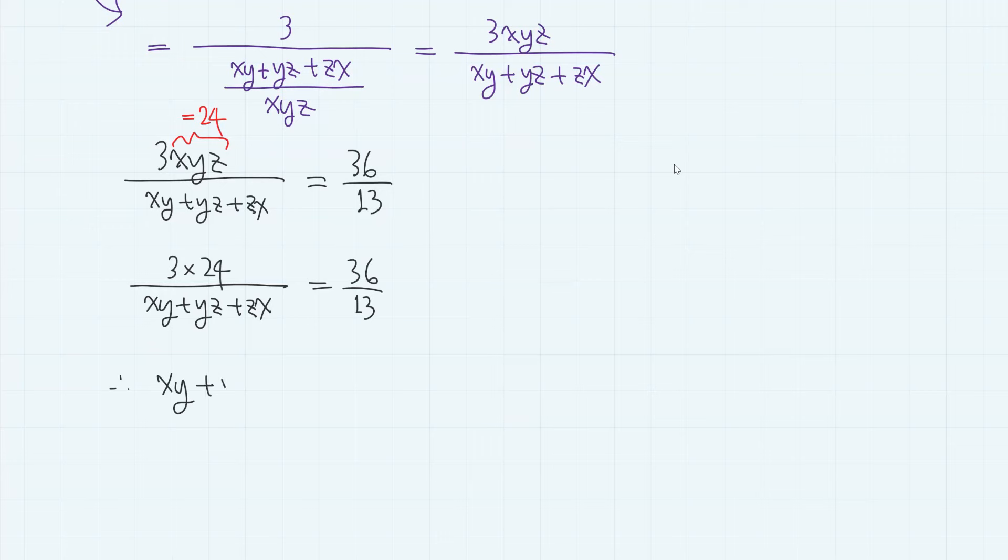Therefore, xy plus yz plus zx is given as 3 times 24 times 13 over 36, which gives 26.